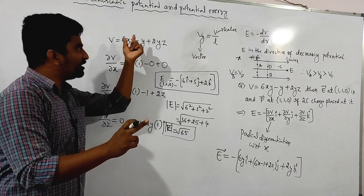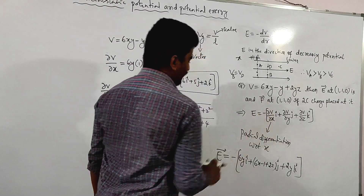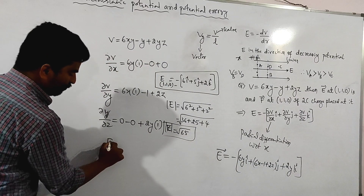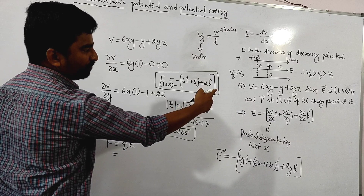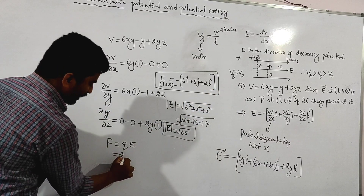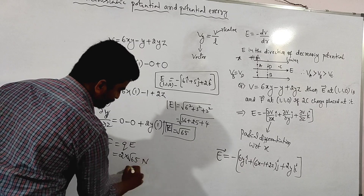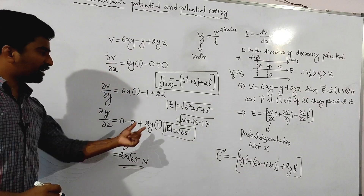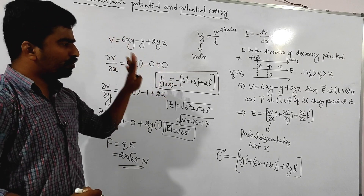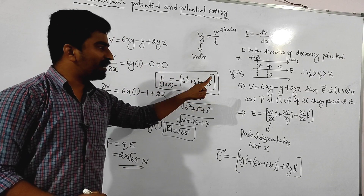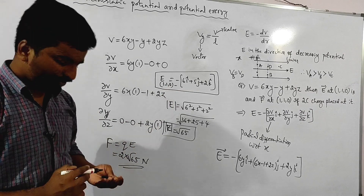Force on a charge at this point: force equals q times E. Here q equals 2 coulombs and the electric field magnitude is √65, so the force equals 2√65 newtons. This is the answer for the force at point (1,1,0). This type of problem appears many times in the examination. These problems are important for your exam.